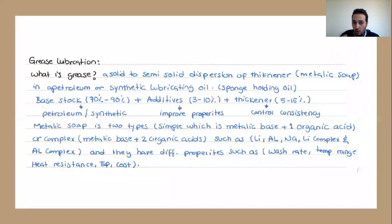The base is stocked between 70-90%, plus some additives between 3-10%, and the thickener between 5-15%. The metallic soap is two types: simple, which is a metallic base plus one organic acid, or complex, which is a metallic base plus two organic acids such as lithium, aluminum,